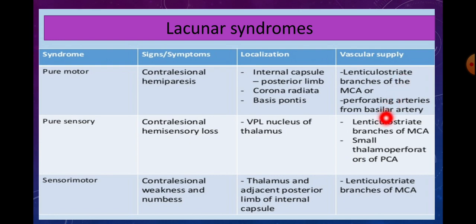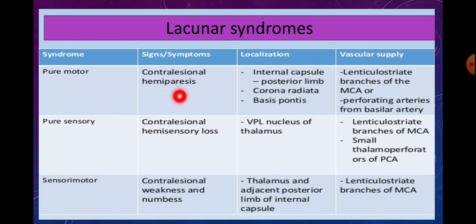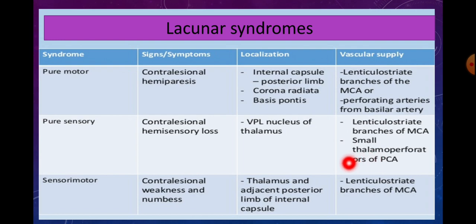The second is pure sensory syndrome, where you have contralateral hemisensory loss. The localization is the VPL nucleus of the thalamus. The vascular supply is lenticulostriate branches of the MCA and thalamoperforators of the PCA, that is the posterior cerebral artery.